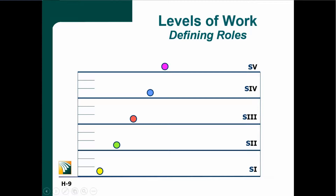Elliot Jaques would have you make a small managerial notation in the upper right-hand corner of that piece of paper. This is an internal managerial notation. If you have a stratum one level of work, in the upper right-hand corner, Jaques would have you write: this is a stratum one role. This position in the organization is to do production, using tools, machinery, and equipment.